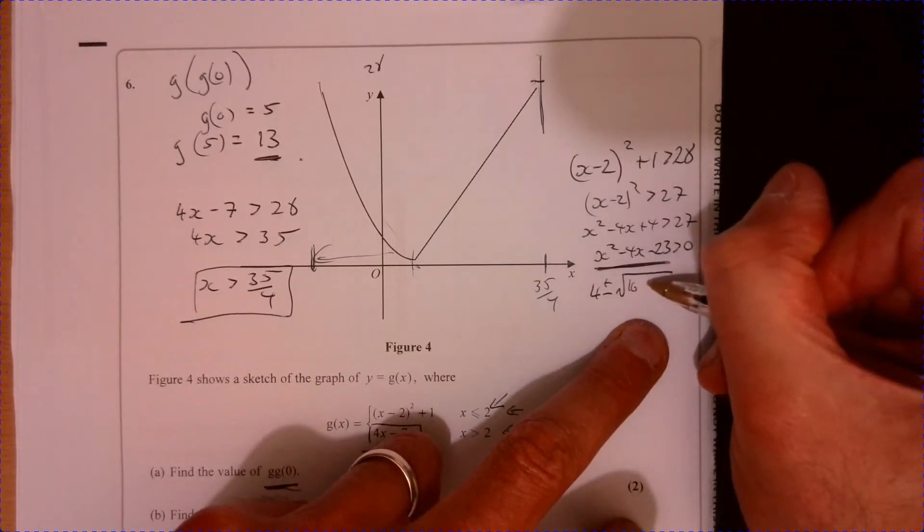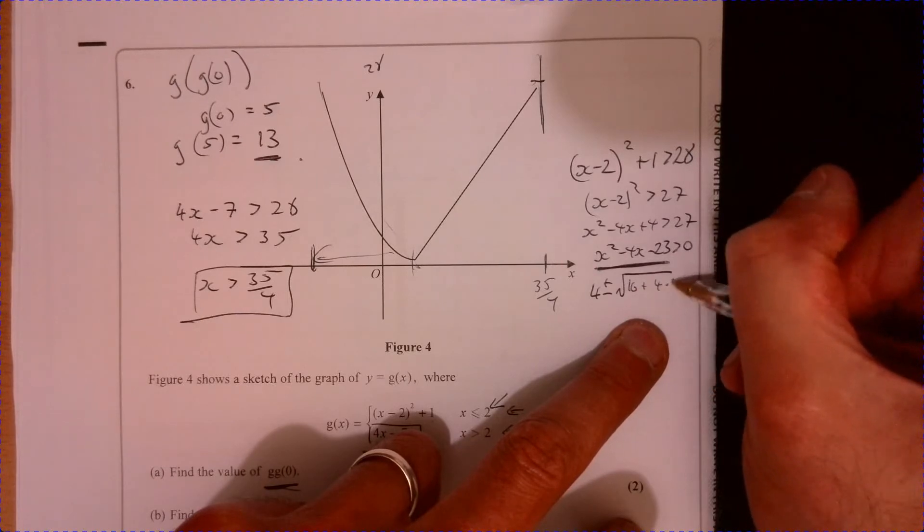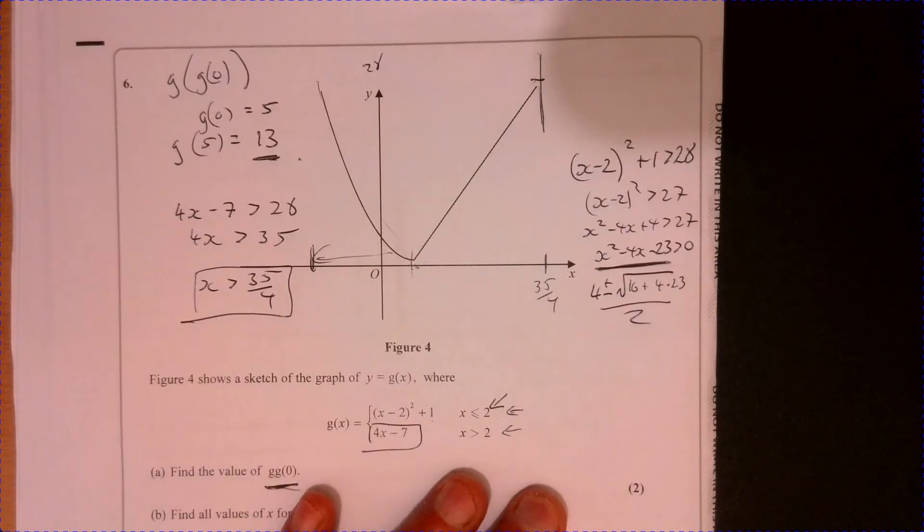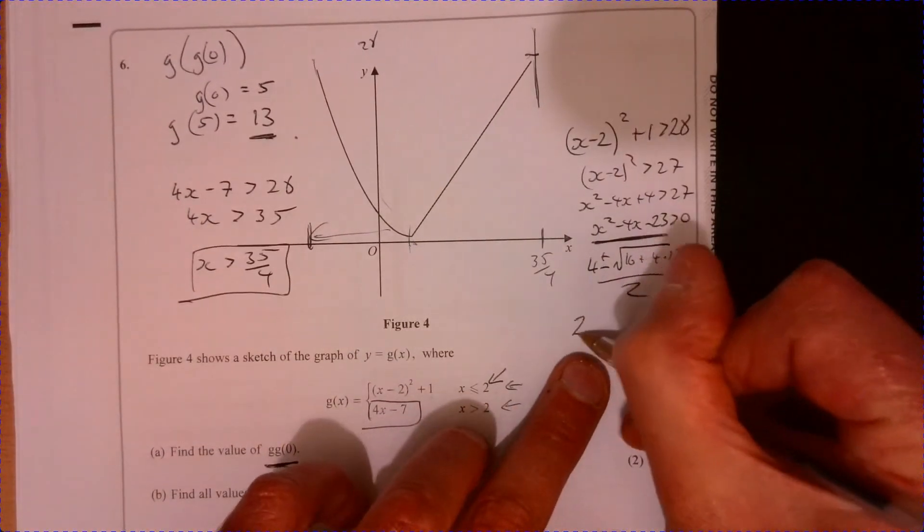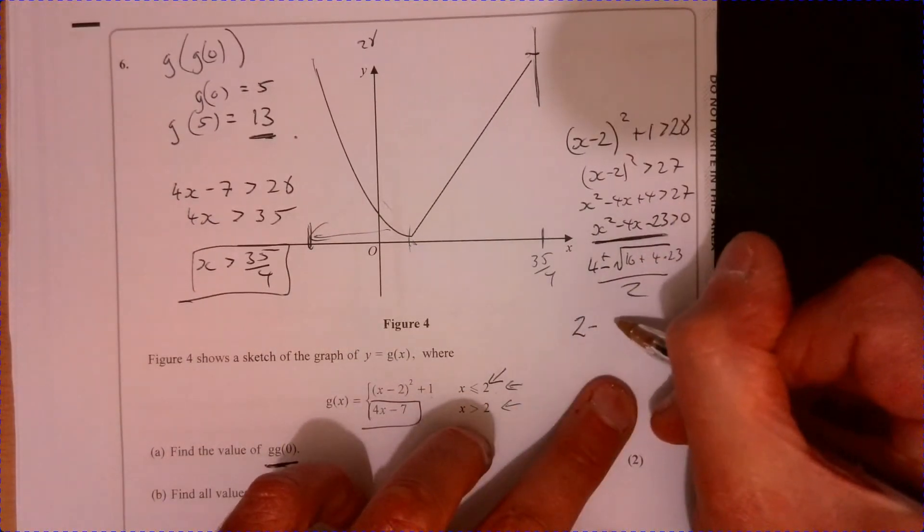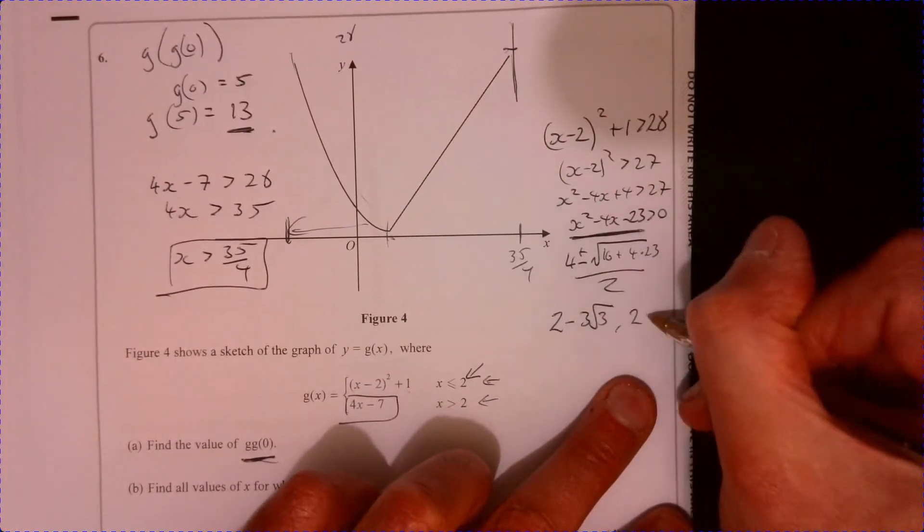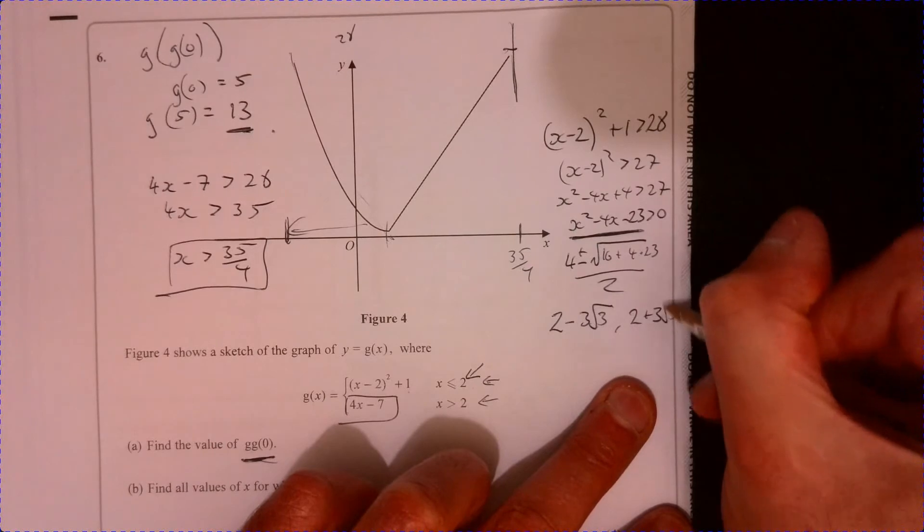So we've got 16, and we're going to have a plus four times the 23 there, and all of that over two. And if you do that, that gives you two possibilities. So we've got two minus three root three, and then we've got two plus three root three.